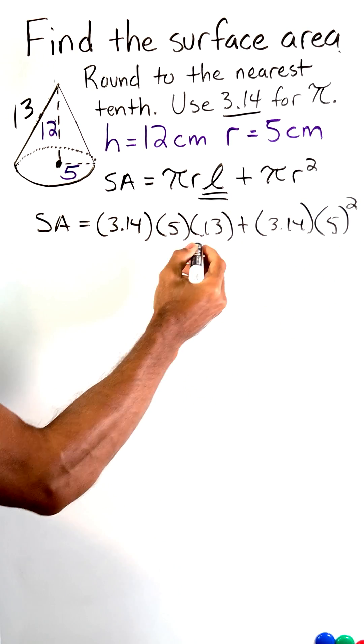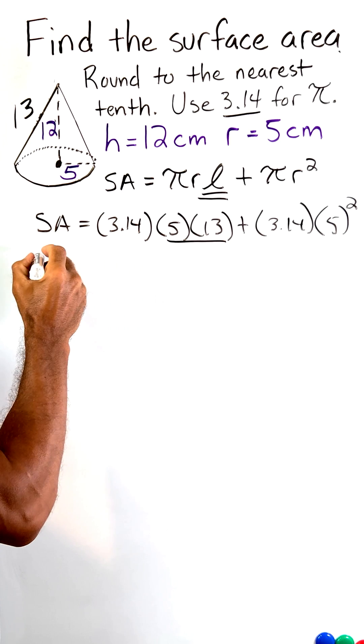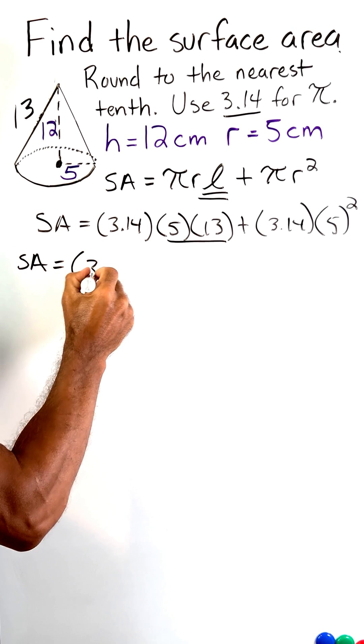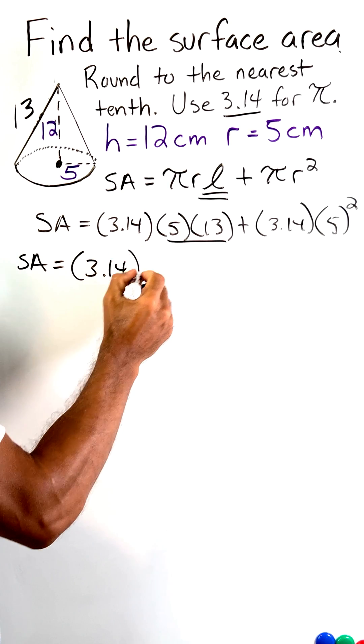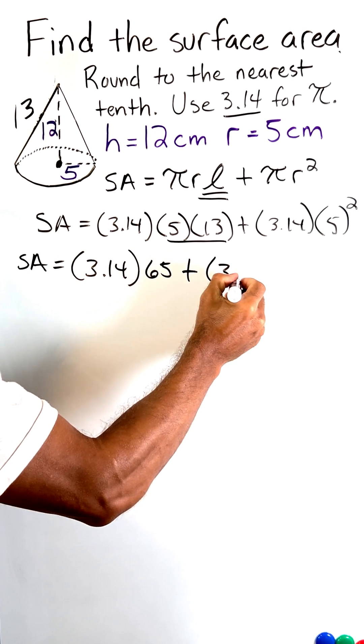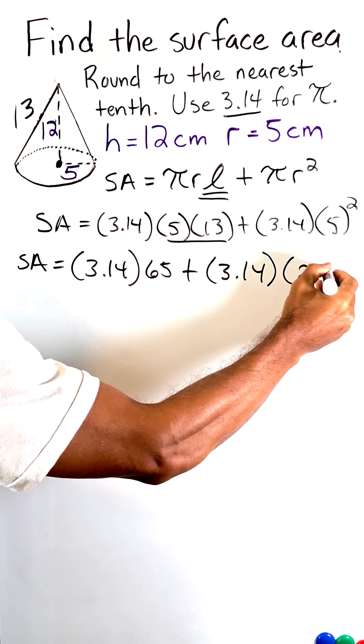All right, let's simplify this a bit. Let's start by taking 5 times 13, which is 65. So we're going to say that our surface area is equal to 3.14 times 65, and then we're going to add that to 3.14 times 25.